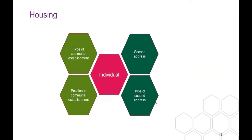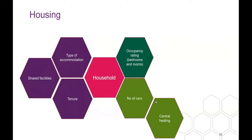For housing, for people living in communal establishments you get the type of communal establishment and position — whether they're resident or a member of staff — and information about second addresses and the type of second address. For households, we get whether they share facilities such as a kitchen or bathroom, the type of tenure, type of accommodation or property, an occupancy rating measure on both bedrooms and rooms — the definition has changed slightly so there may be comparability issues — and whether people have cars and central heating.